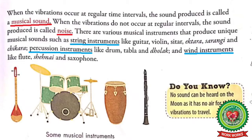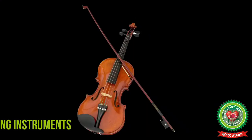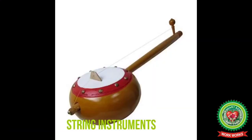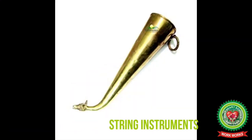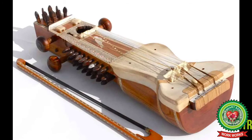Pleasant sounds produced by vibrations at regular intervals are called musical sounds. Examples of musical sounds are sounds produced by string instruments like guitar, violin, sitar, ektara, sarangi, and chikara, etc.